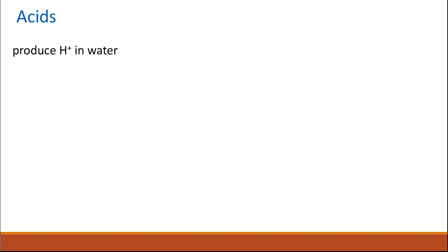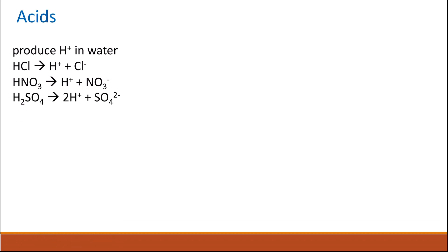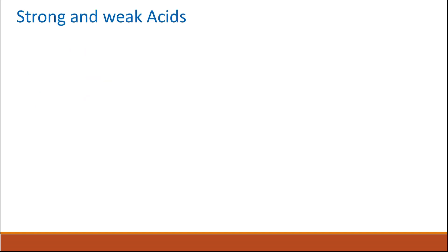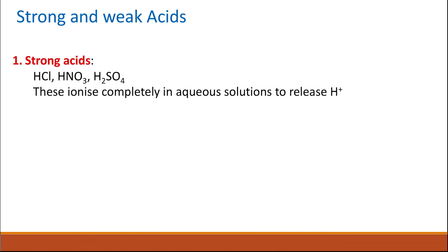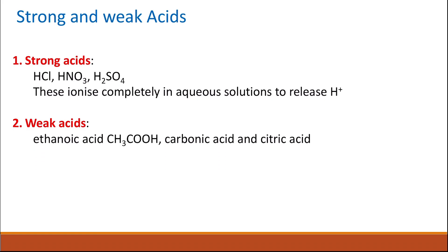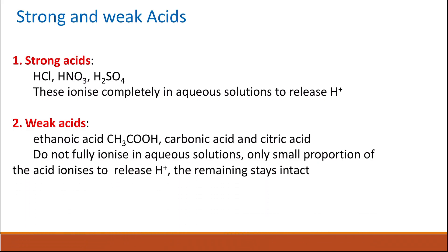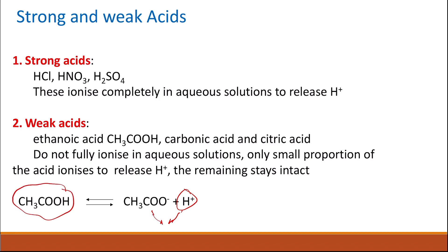Acids produce hydrogen ions in water. Examples include hydrochloric acid, nitric acid, and sulfuric acid. There are two types: strong acids and weak acids. Strong acids like hydrochloric acid, nitric acid, and sulfuric acid ionize completely in water to give hydrogen ions and negative ions. Weak acids like ethanoic acid, carbonic acid, and citric acid only partially ionize — in a reversible reaction, the hydrogen ions and negative ions can recombine to give the intact acid again.